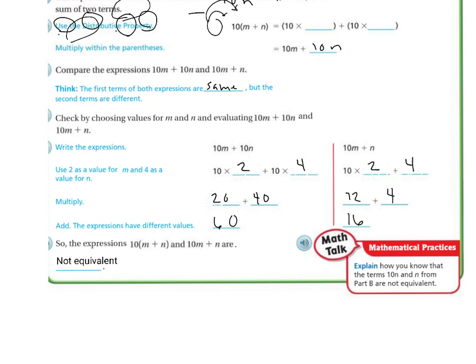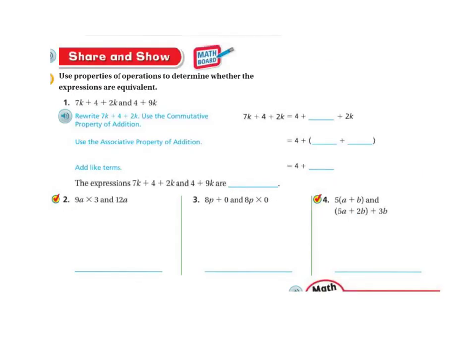If they were equivalent, they would be the same number, right? All right, let's do a couple of Share and Shows. So here's my expressions that I'm evaluating. I've got 7k plus 4 plus 2k, and I'm trying to compare it to 4 plus 9k. I'm trying to see if these two are equivalent. If I rewrite it using the Commutative Property of Addition, then I have 7k plus 4 plus 2k. So all I'm doing is I'm combining my like terms.